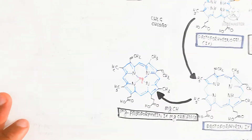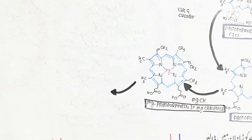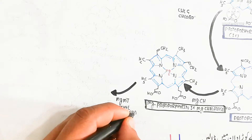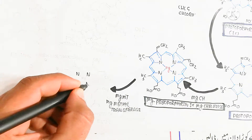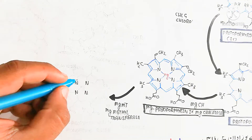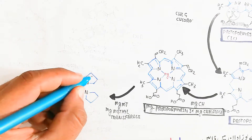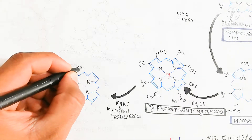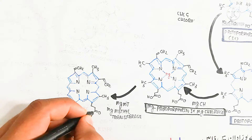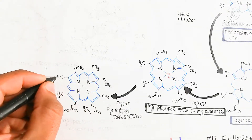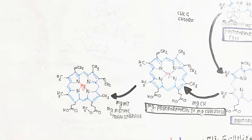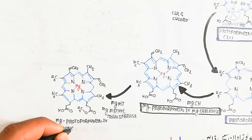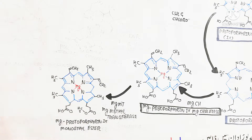Next, the magnesium methyltransferase enzyme converts magnesium protoporphyrin 9 chelate to produce magnesium protoporphyrin 9 monomethyl ester through the action of the magnesium methyltransferase enzyme.